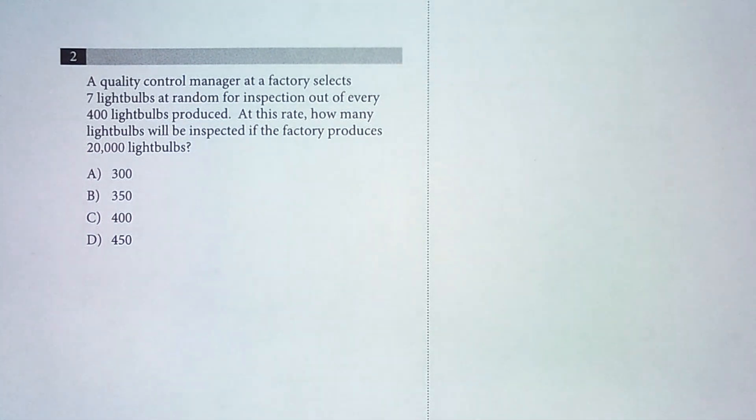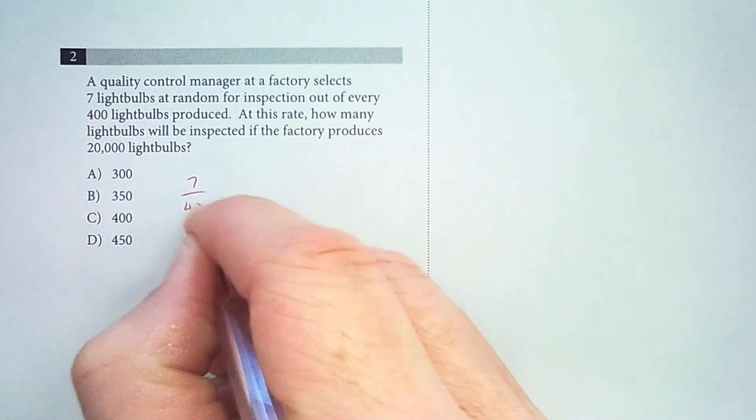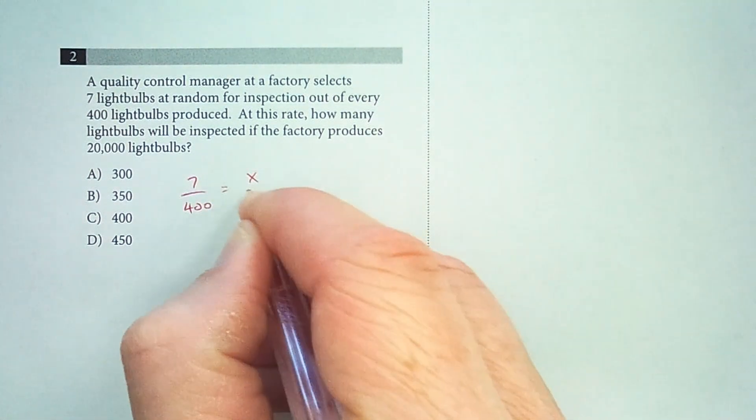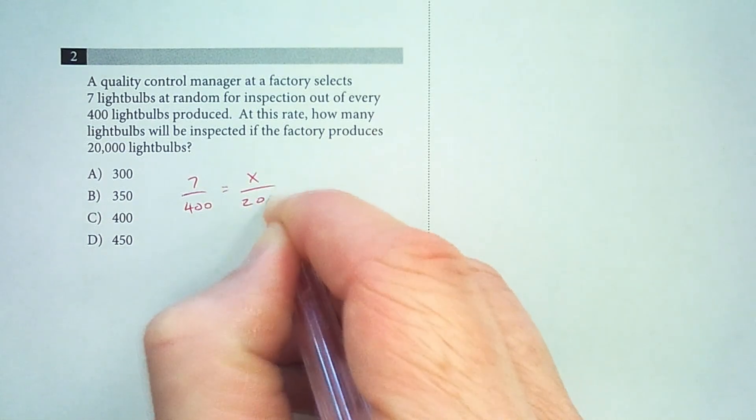For this problem I'm going to set up a proportion. Seven out of every 400 light bulbs is tested, how many out of 20,000? So seven is to 400 as x is to 20,000.